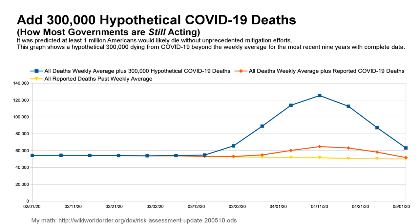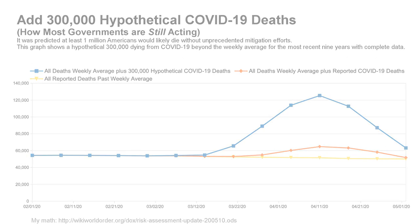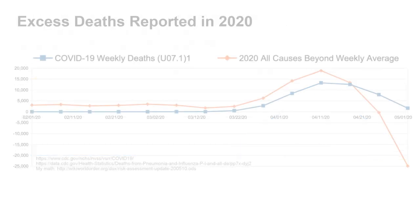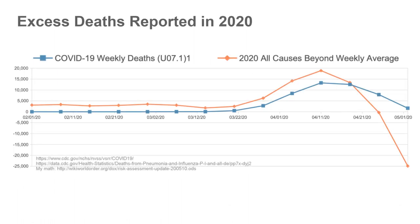It seems most governments are still acting as if the model projections are more accurate than the observational data. This chart shows total weekly reported deaths in 2020 minus the historical average for total weekly deaths reported, and this measure of excess deaths is placed next to the reported COVID-19 weekly deaths for comparison.